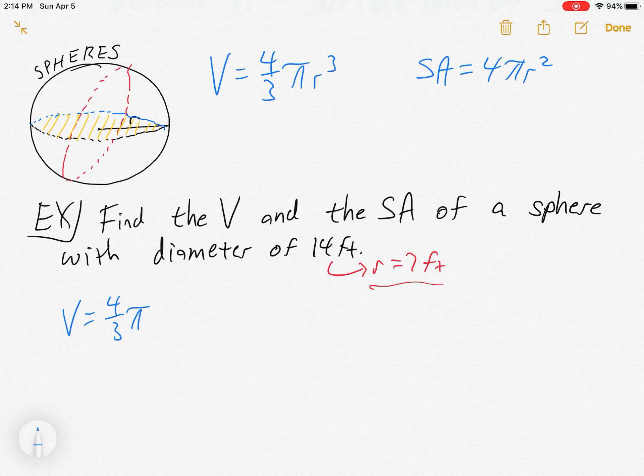So first up, let's do volume. Volume we said was 4 thirds pi r cubed. So 4 thirds pi 7 cubed. And I've picked some crazy numbers here. 7 cubed. That's a good one to know. I mean, 7 squared is 49. 7 times 49 is 343.